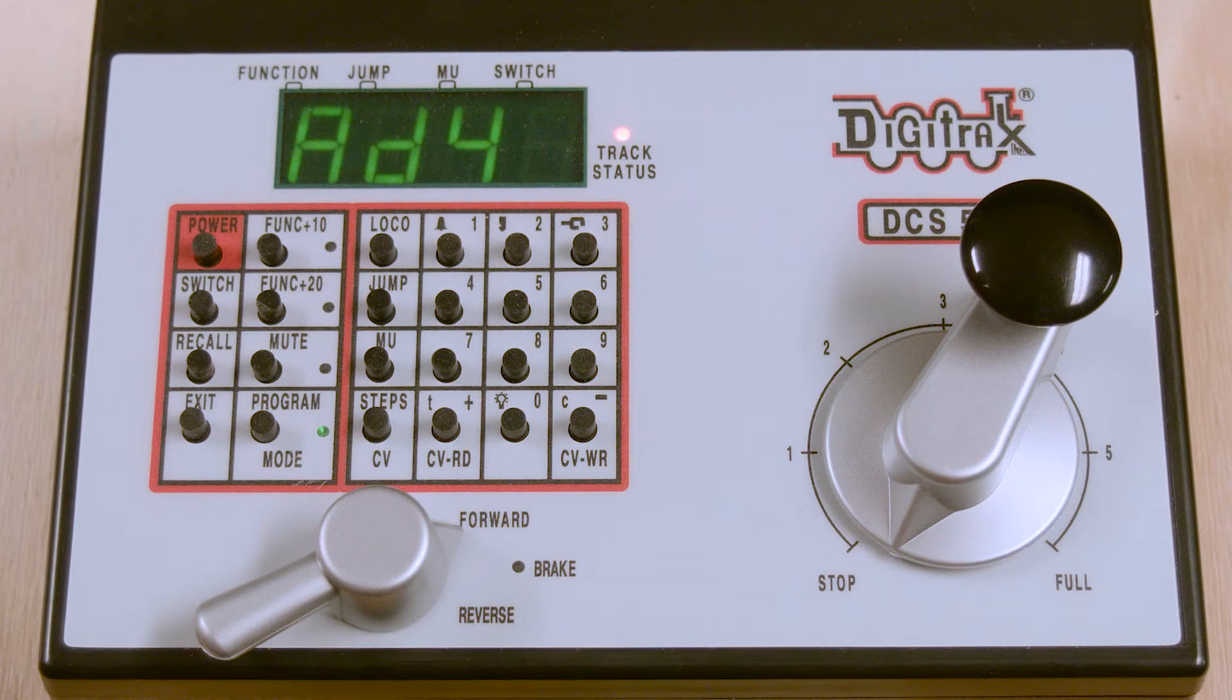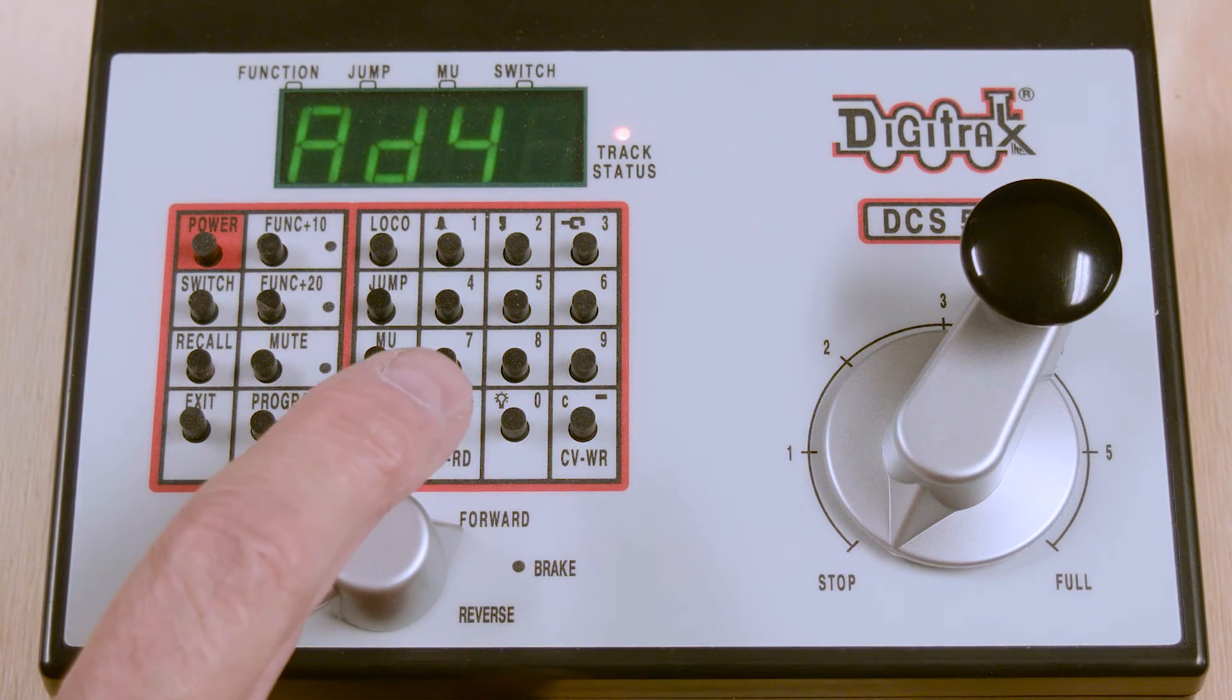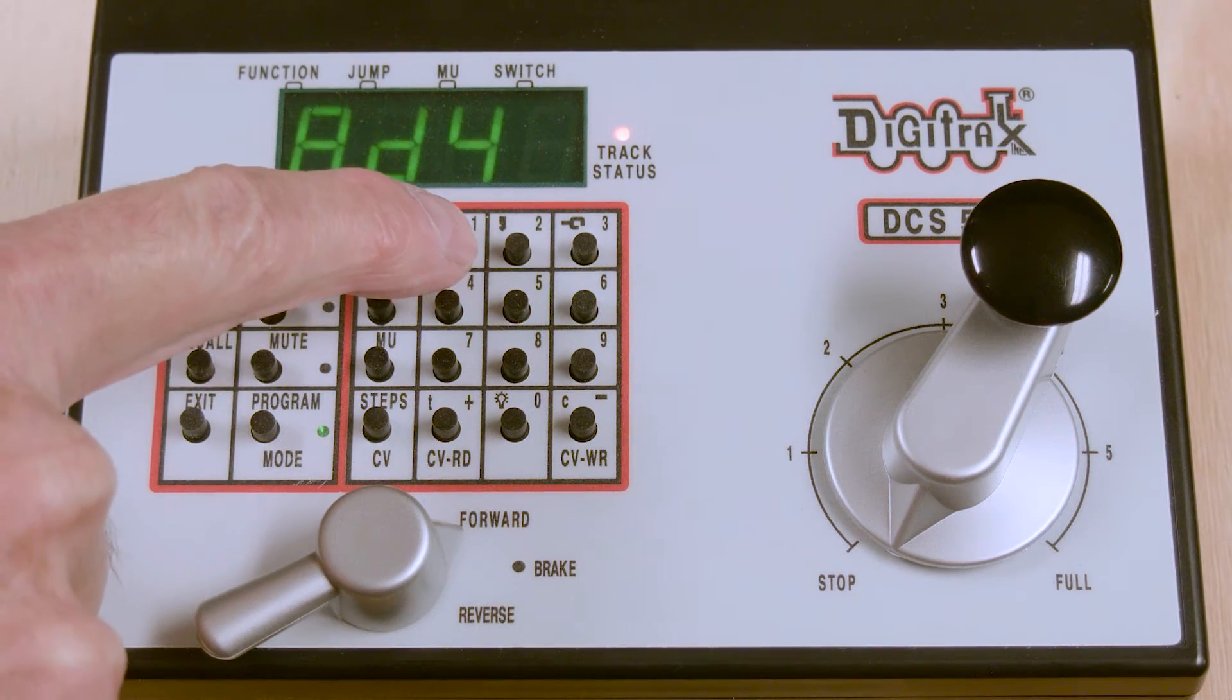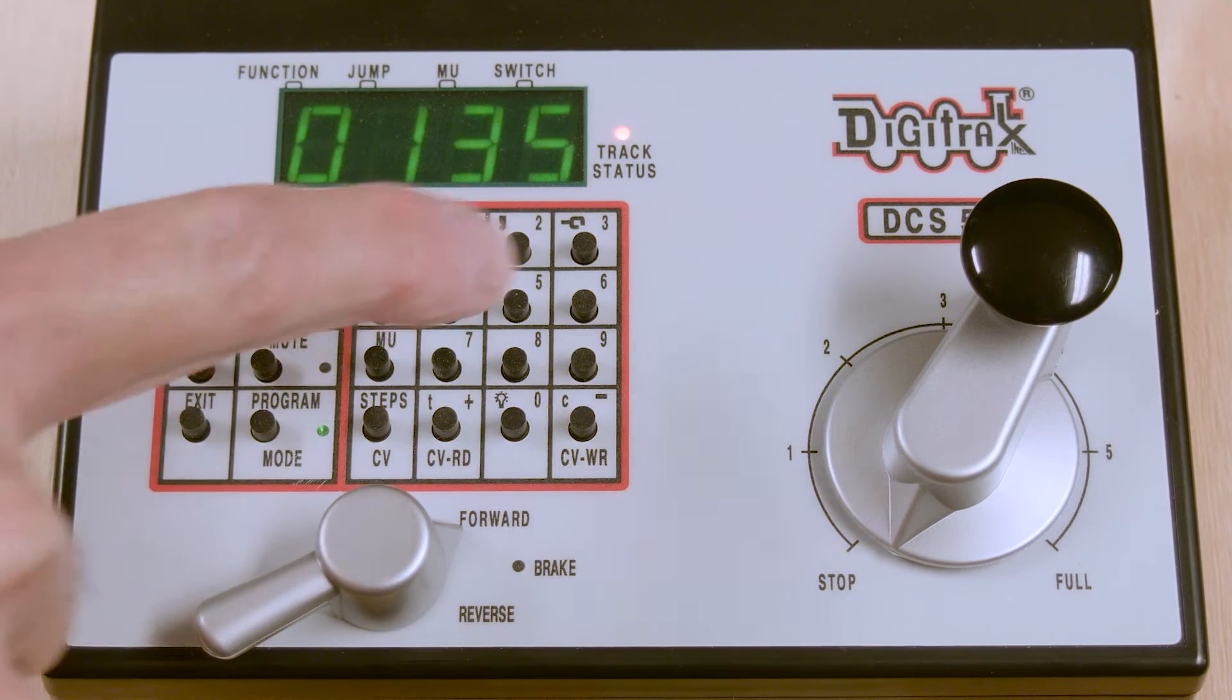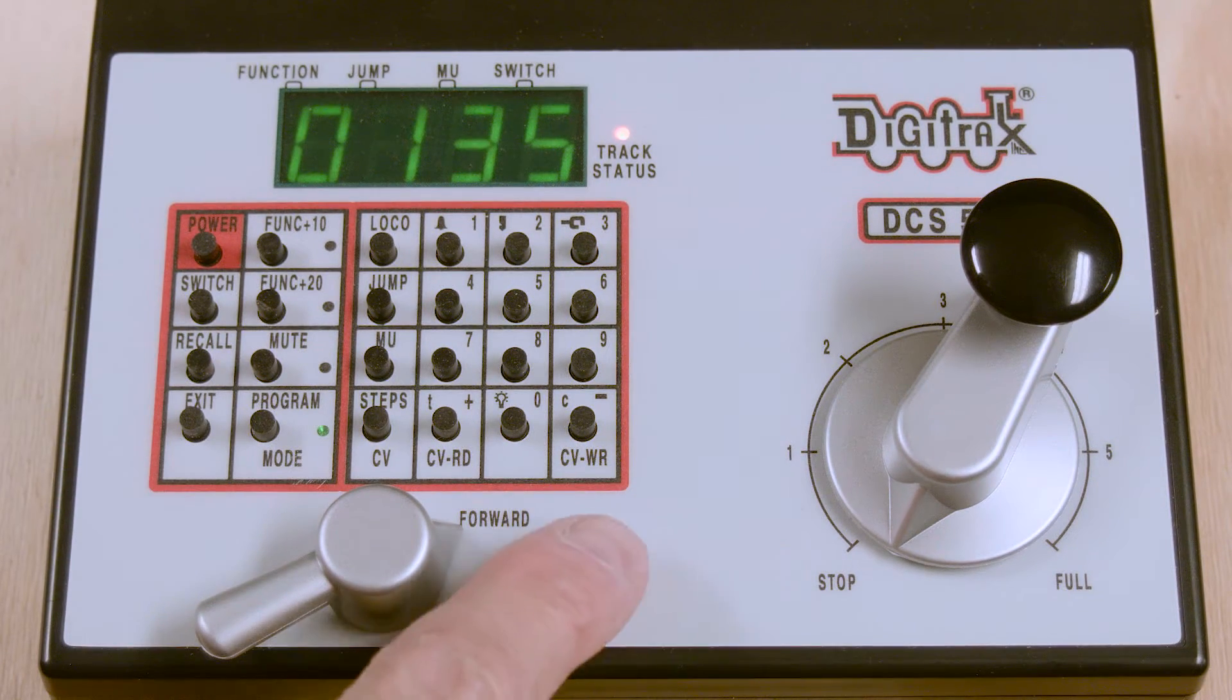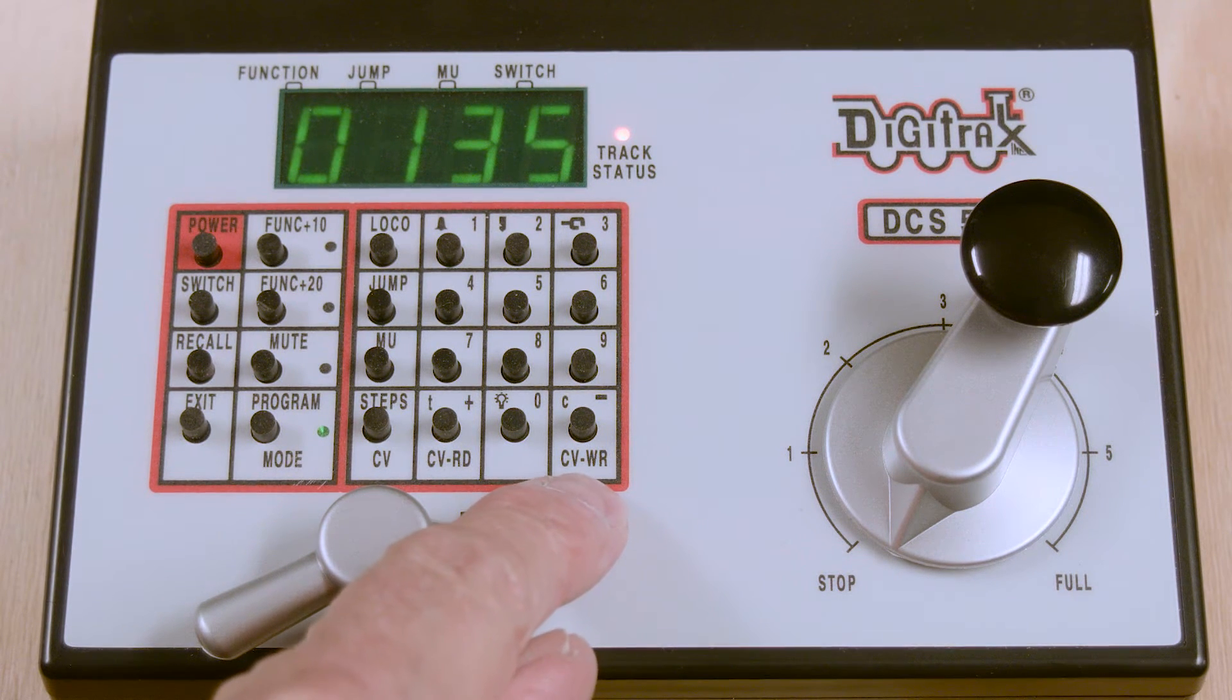We're then going to press our number 135 into the Zephyr by pressing 1, 3, and 5, and then we're going to press the CVWR key to write 135 to this decoder.